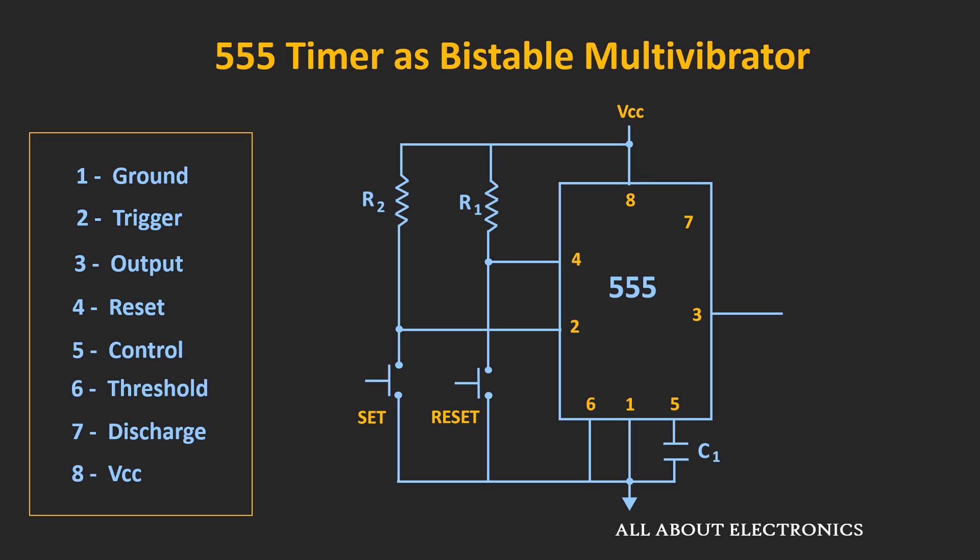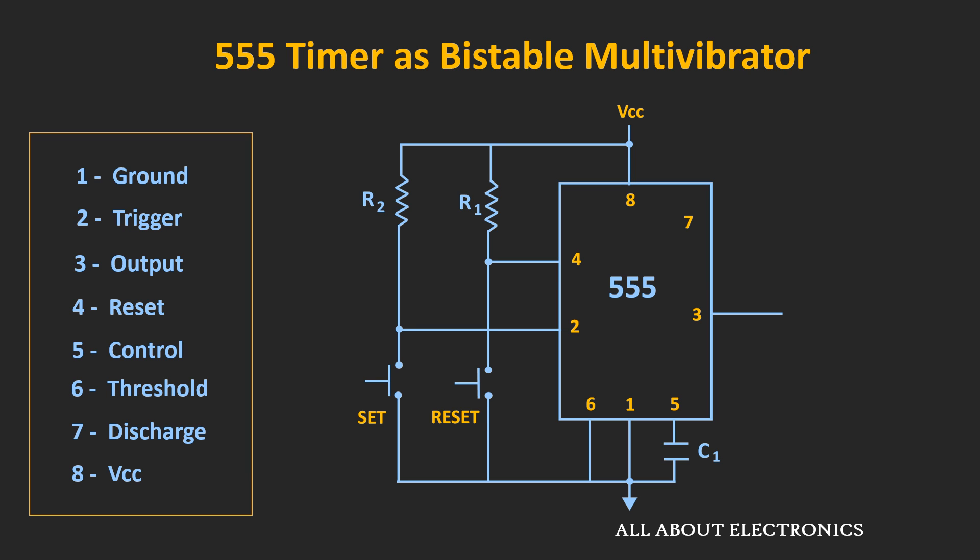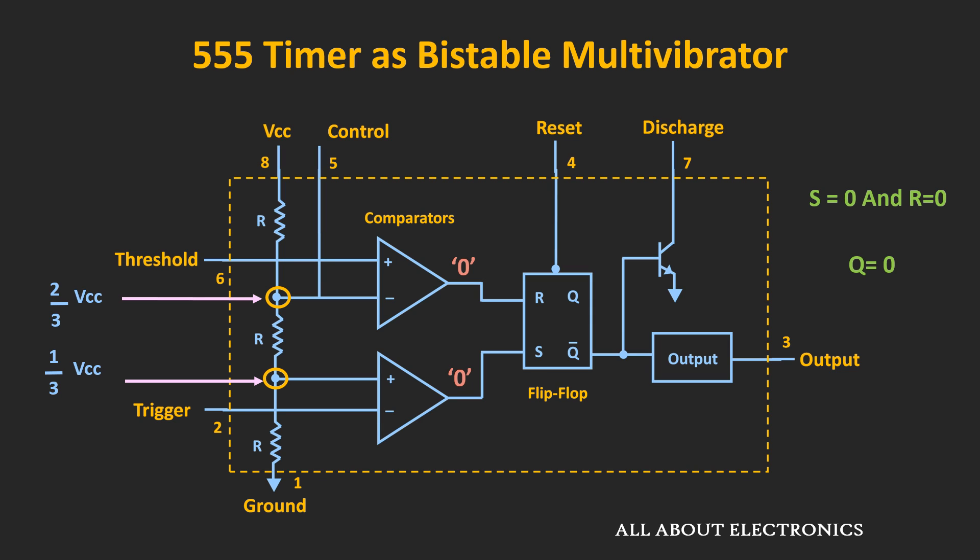Now let's understand the working of this circuit by looking at the internal block diagram. Like we had seen in the previous videos, the voltages at these two nodes of the voltage divider will be 2/3 Vcc and 1/3 Vcc respectively, and these two voltages will act as a reference voltage for the two comparators. The threshold pin is connected to the ground terminal, which means the voltage at pin number 6 will always be less than the reference voltage, so the output of the first comparator will always remain at logic low.